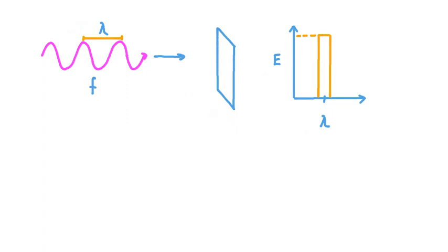Now, in a classical physics model — and this was generally the model that was used up until the 20th century — this amount of energy received by the plate could be literally anything. If we wanted to make it slightly more, we could do that by increasing the intensity of the incoming light on this plate. Or if we wanted to make it slightly less, we could do that as well by decreasing the incoming light intensity. The point was that, in general, this energy value recorded by our plate could be anything. This is another way of saying that, at that time, it was believed that energy was continuous.